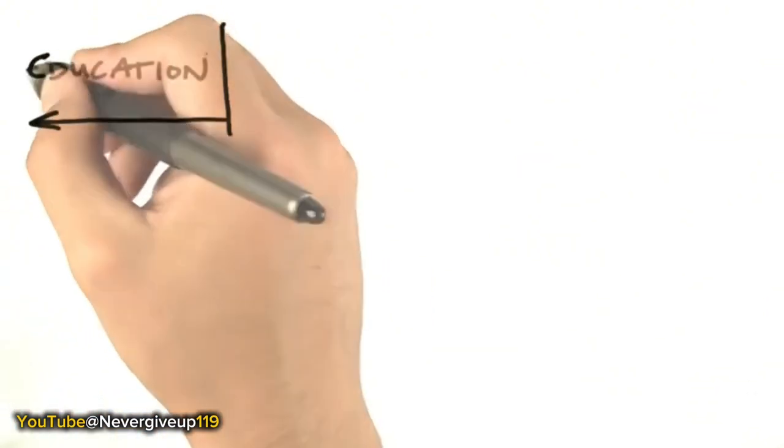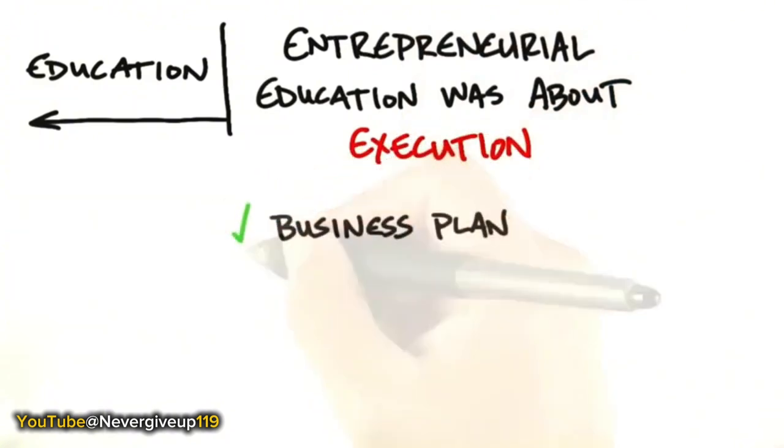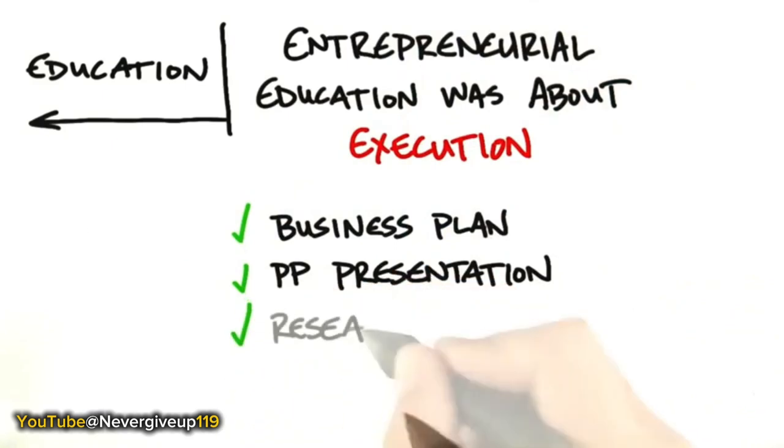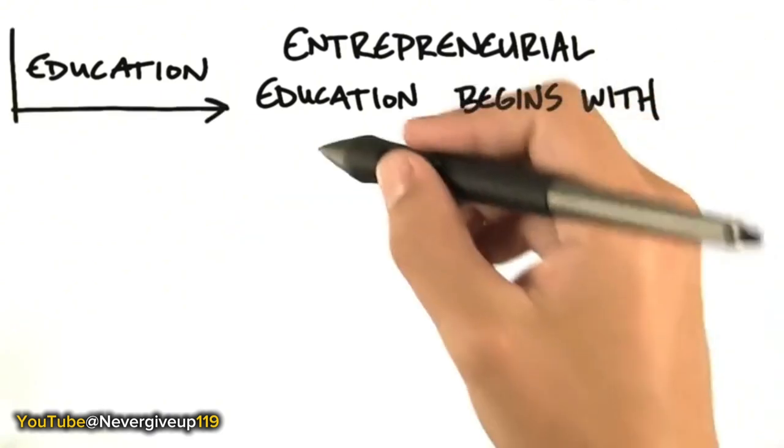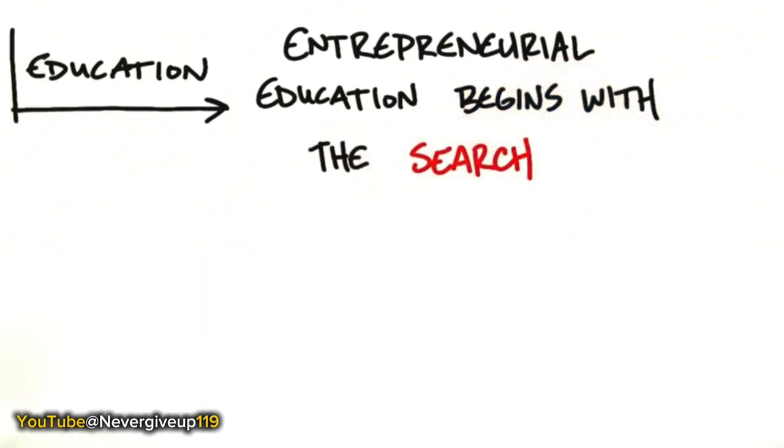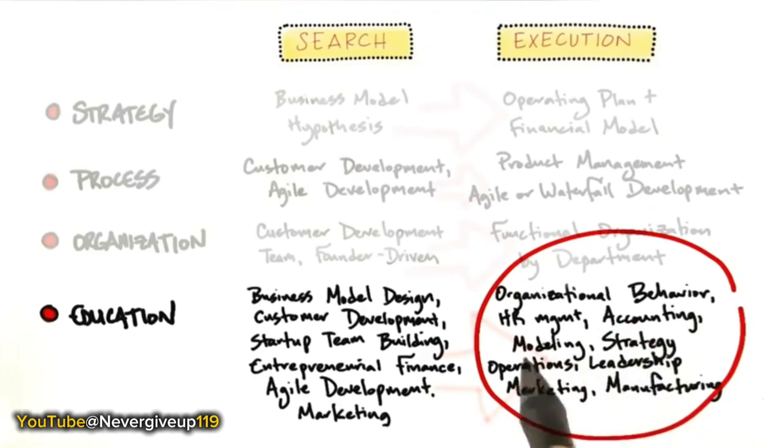Let's take a look at the last piece, which is why you're here. How do we teach entrepreneurship? In the past, entrepreneurial education was about execution. We're going to teach you how to write a business plan, how to put together the PowerPoint for the VC presentation. If we're doing it really well, we'll have you do lots of research. But it really assumed it was all about execution. What we now know, that's just simply not the case. Entrepreneurial education, the reason why you're taking this class, is about the search for the business model.